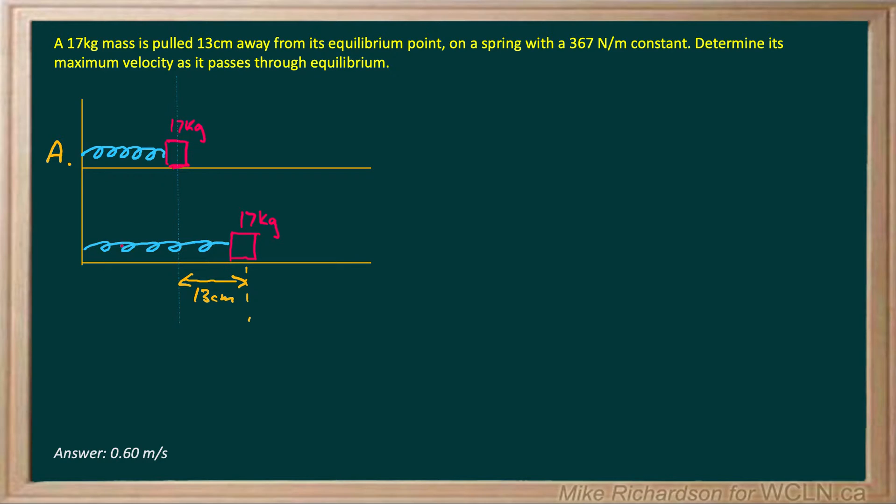It's going to overshoot that equilibrium line, end up 13 centimeters on this side assuming it's an ideal spring, and start to oscillate back and forth. Now we want to know its maximum velocity, which occurs right in the middle, right when it's passing through the center.